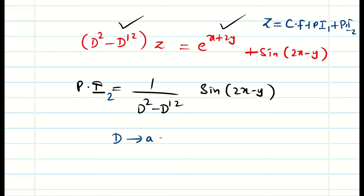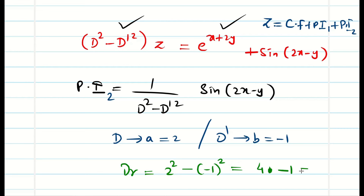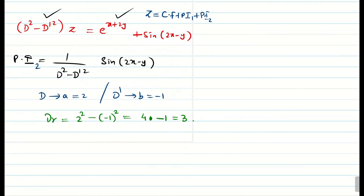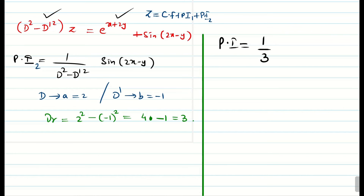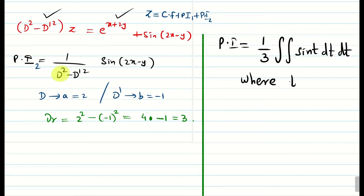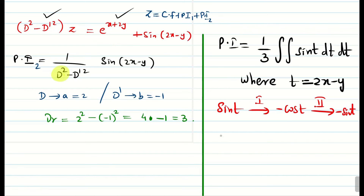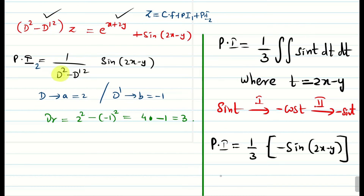Replace d by a = 2 and d' by b = -1. Denominator: (2²) - (-1)² = 4 - 1 = 3, which is non-zero. PI₂ = 1/3 · [double integral of sin(t) dt dt] where t = 2x - y. First integral: -cos(t). Second integral: -sin(t). Therefore PI₂ = (1/3)·(-sin(2x - y)) = -1/3 · sin(2x - y).